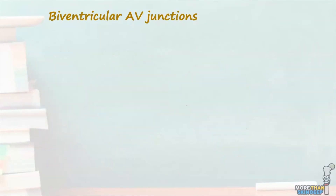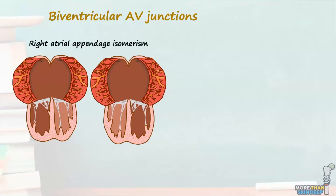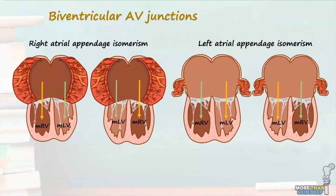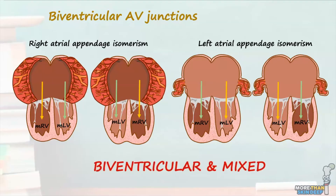In the next type of AV junctions, we see both hearts possess right atrial appendage isomerism, where the right atrial appendage is present on both left and right sides of the septum. In this case, one right atrium is connected to an underlying morphologically right ventricle, and the other right atrium is connected to an underlying morphologically left ventricle. This pattern can also be seen in hearts which both have left atrial appendage isomerism — one left atrium is connected to an underlying morphologically left ventricle, and the other left atrium is connected to an underlying morphologically right ventricle. We describe these hearts as having biventricular and mixed AV junctions, which form the third and final group of biventricular AV connections.